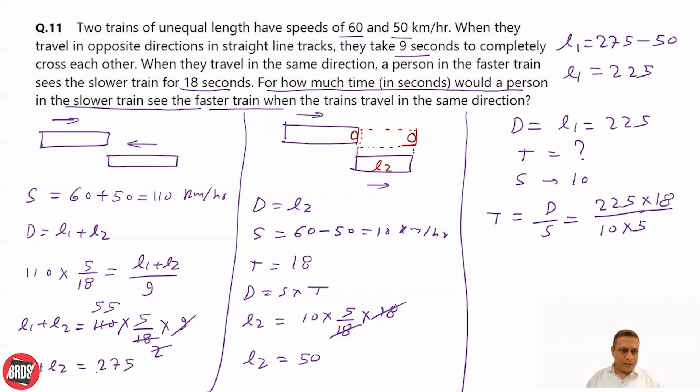You simplify this. 5, 4s are 20, 2 and 5 is 5, 2 5s are 10, 9 5s are 45, 9 9s are 81. 81 seconds is the answer to this question.